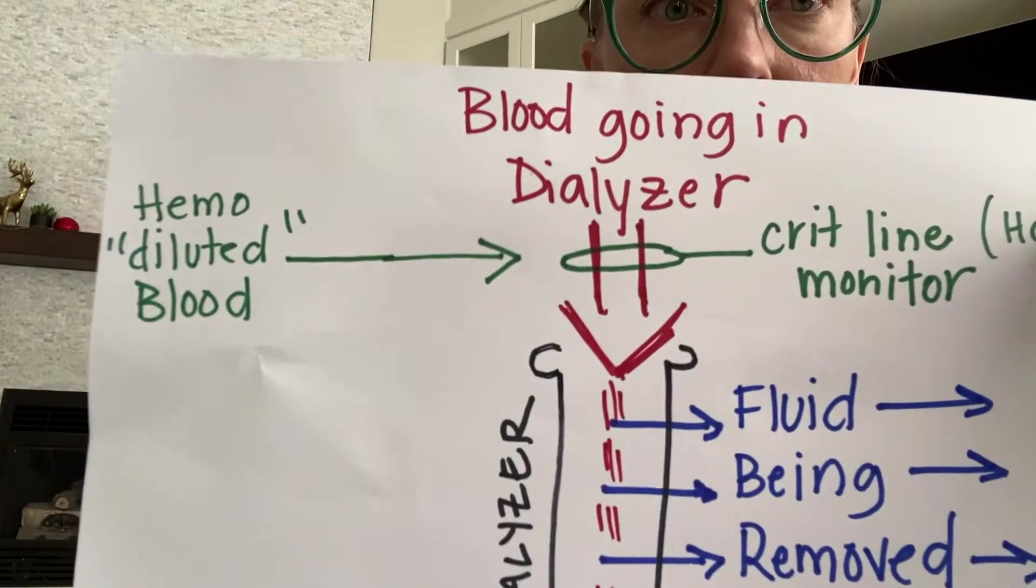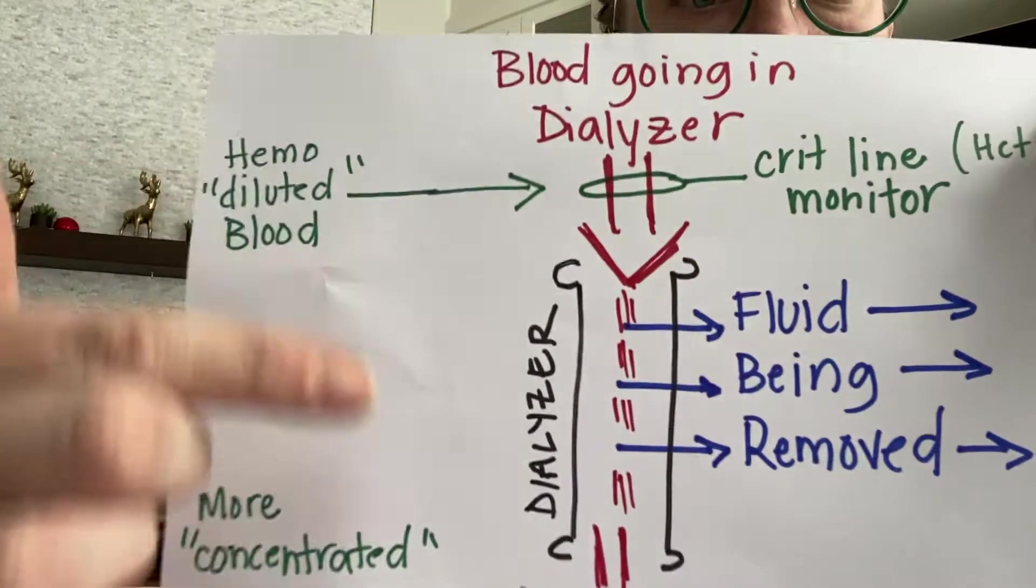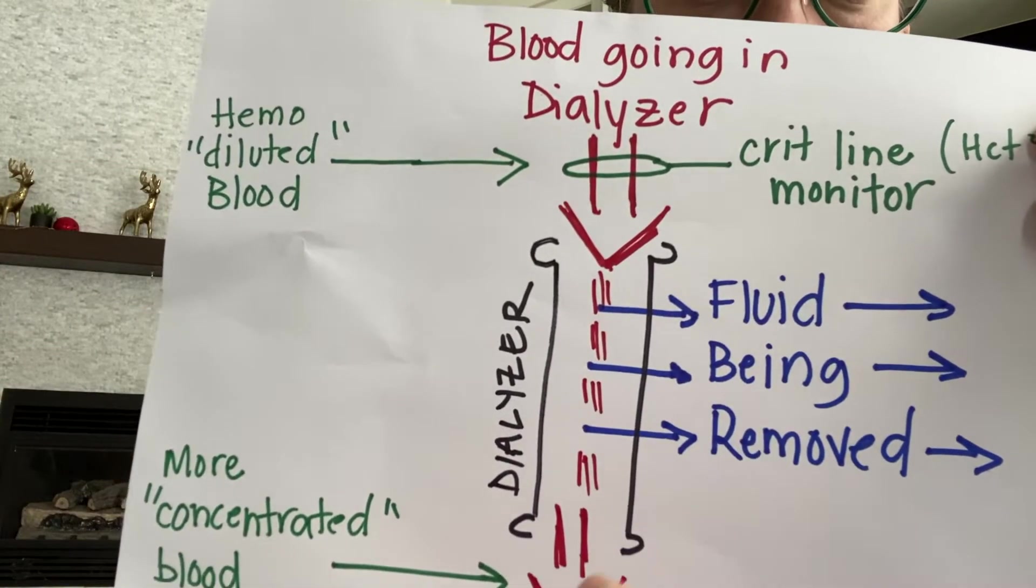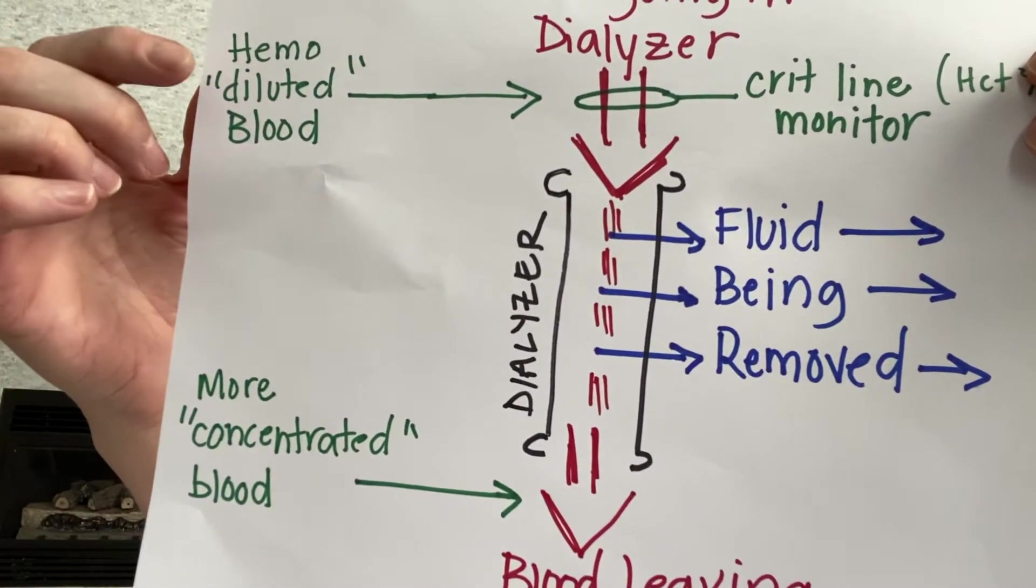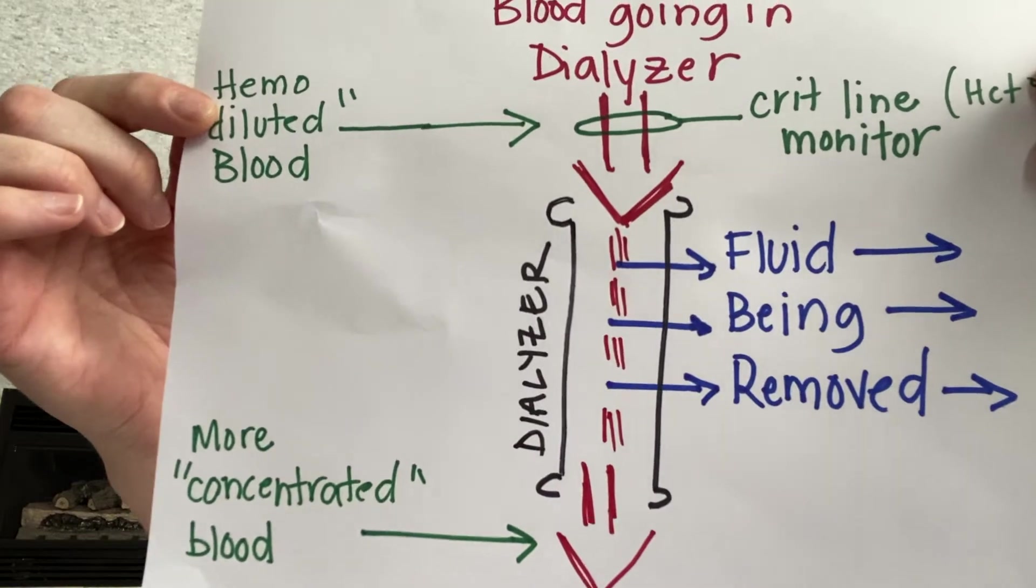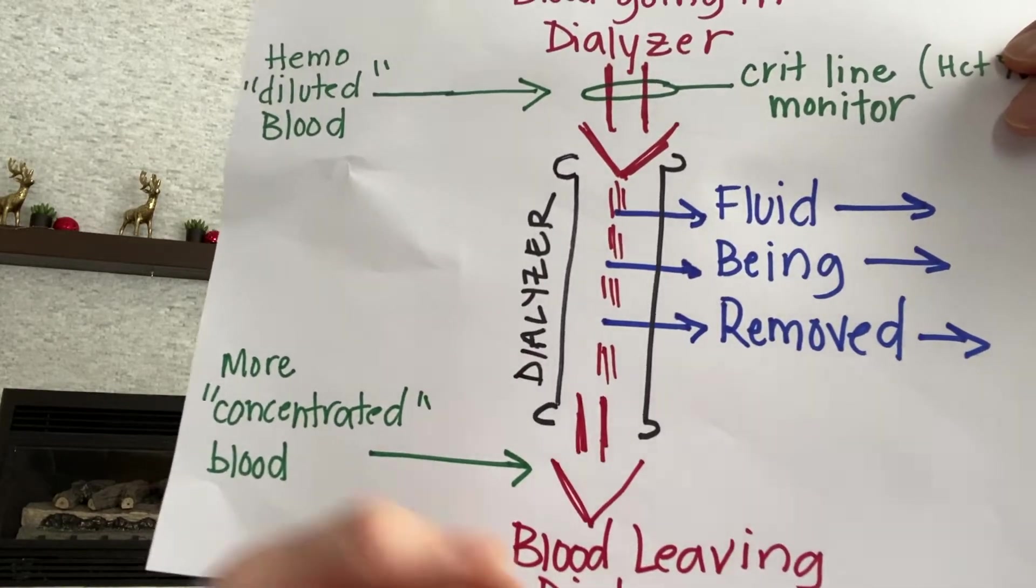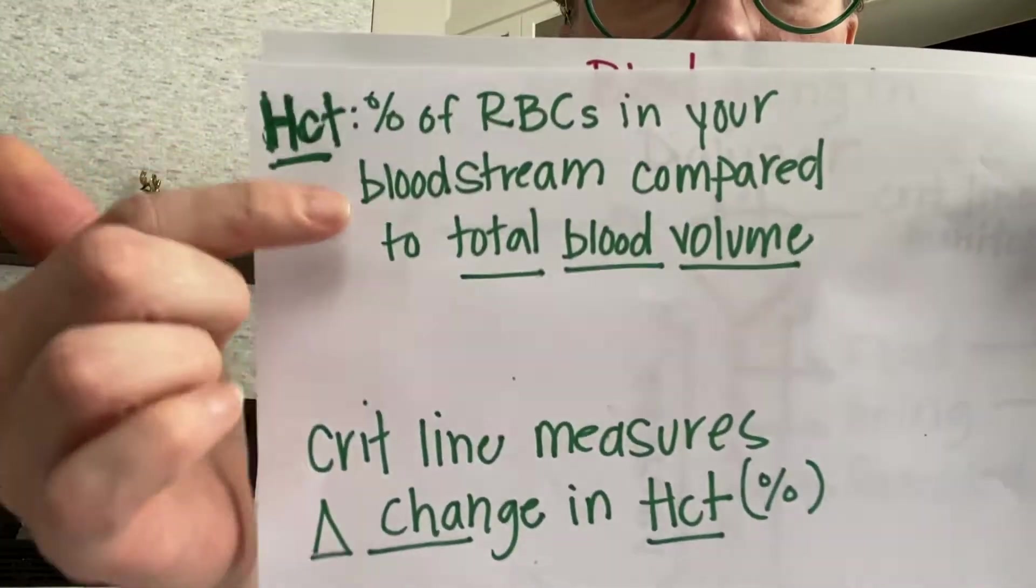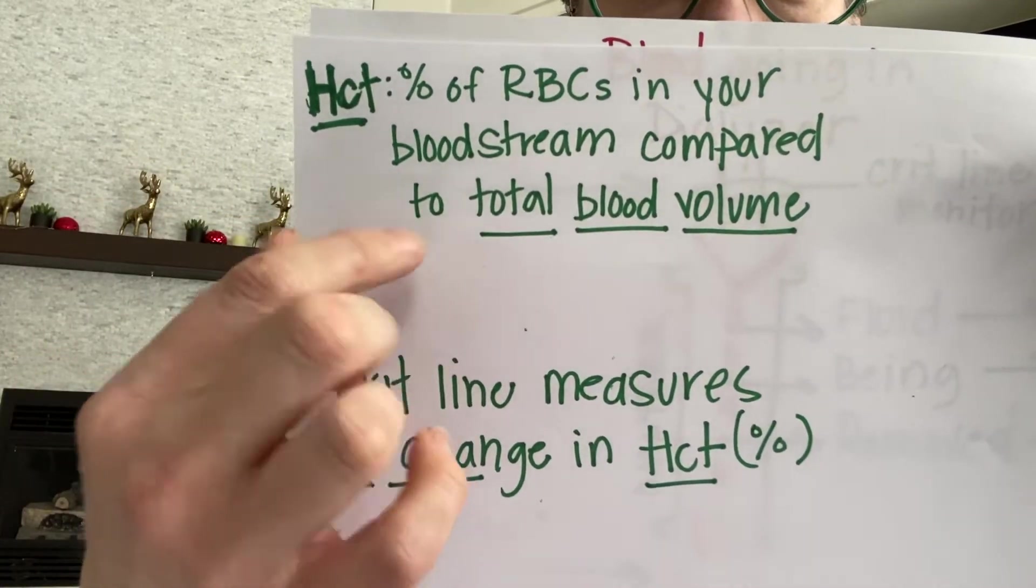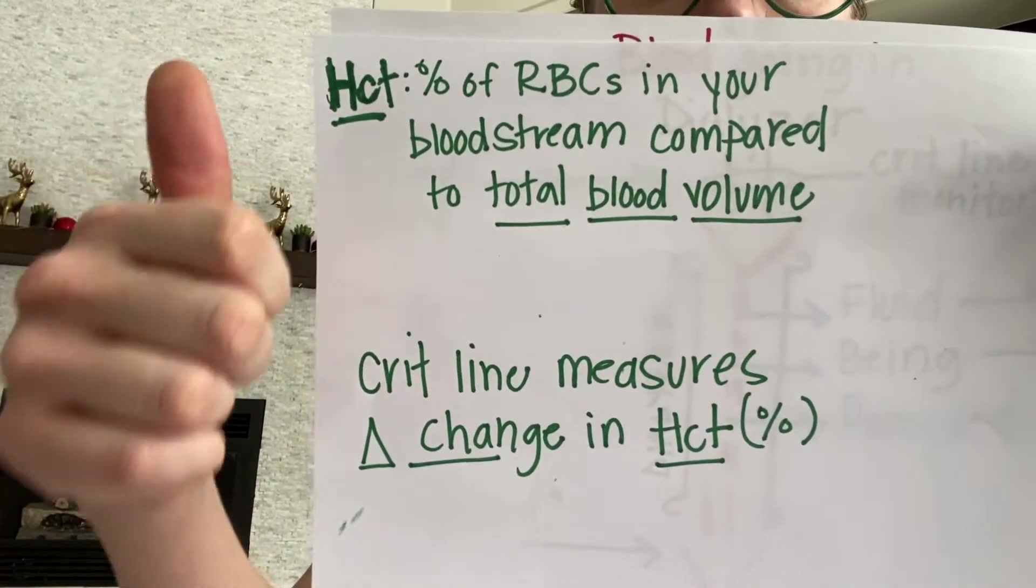During dialysis, you have blood entering the dialyzer and this blood is more diluted with more fluid in it. It goes through the dialyzer and the machine is removing the fluid, so the blood coming out of the dialyzer is more concentrated. You're going to have more diluted blood with a lower hematocrit, and when the blood comes out of the dialyzer, you're going to have a higher hematocrit. Through dialysis, you're changing the percent of red blood cells compared to total blood volume. If you're removing blood volume but not removing hematocrit, you're going to start increasing their hematocrit levels.